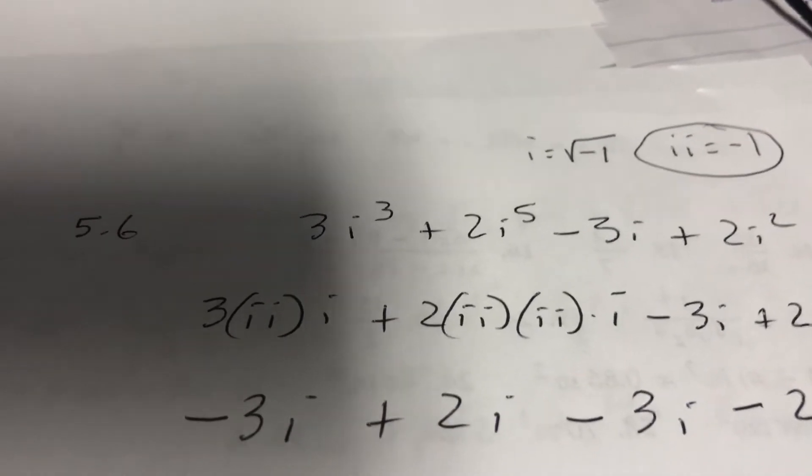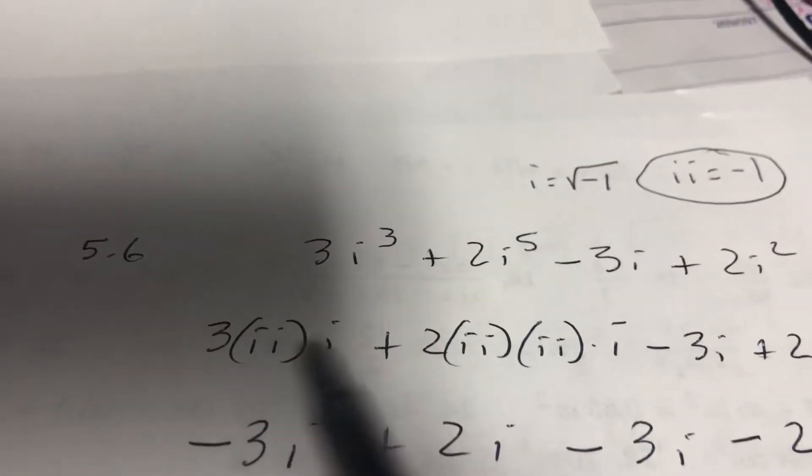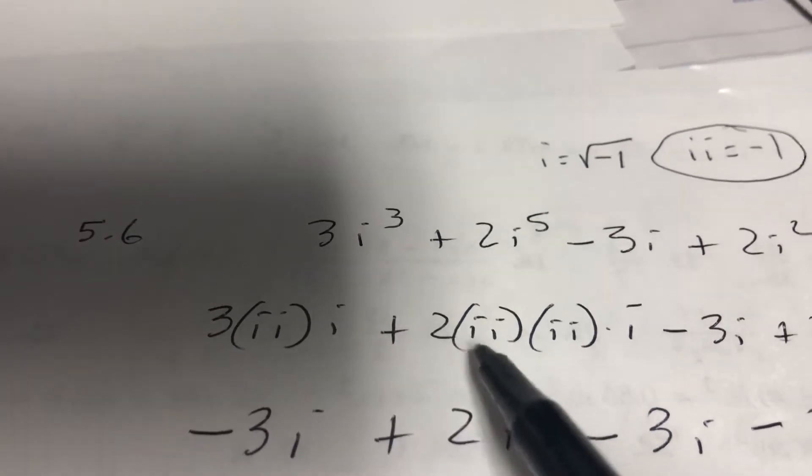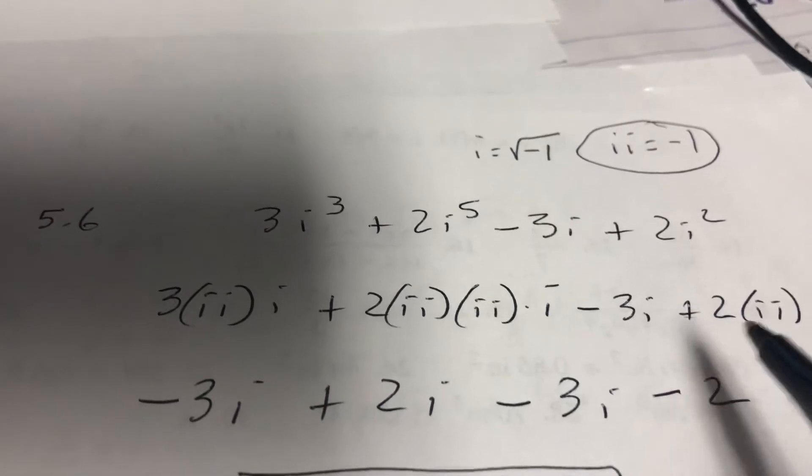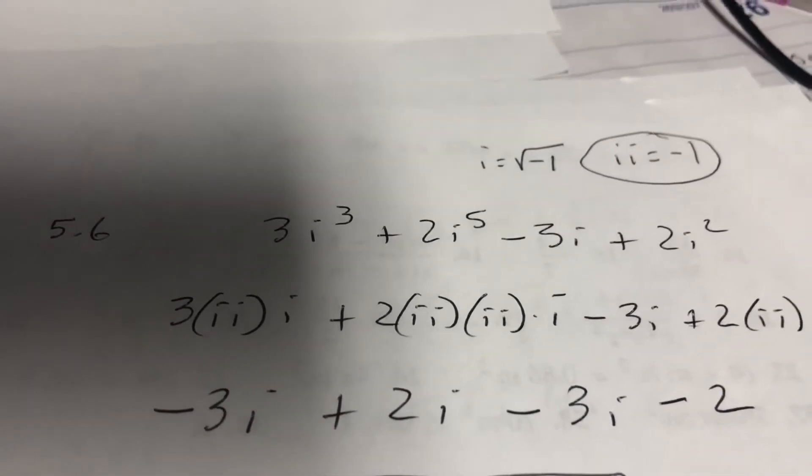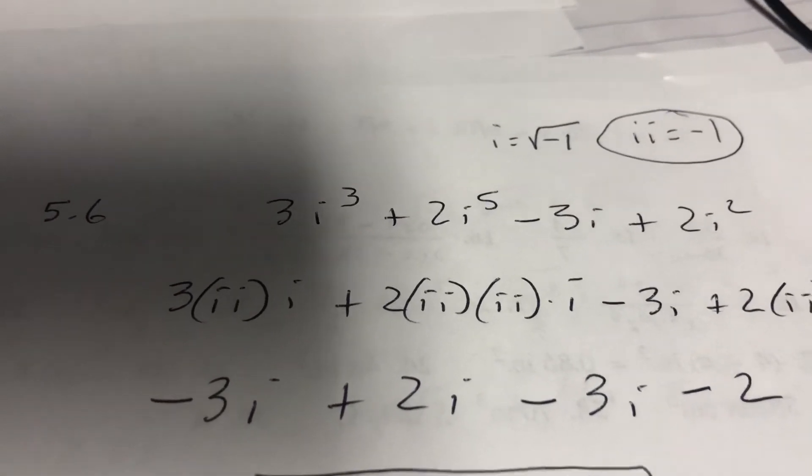I put the two i's together, so I go i times i times i and I group them in two. So i·i, i·i, i minus 3i plus 2·i·i. Now I know that i times i is negative 1.